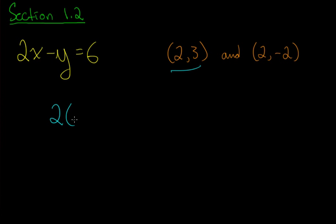So we're going to plug in to see if the point (2,3) is on the graph of 2x minus y equals 6. So 2 times 2 is 4, and we can already see that this does not work.